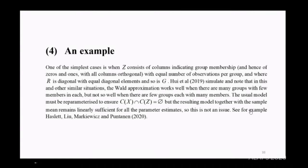An example. One of the simplest cases is when Z, the matrix of zeros and ones that multiplies gamma, is columns containing group membership, hence zeros and ones, all columns orthogonal. I'm going to look at equal numbers of observations per group, R diagonal, and so is G. The Hui paper simulates this and notes that in this and other situations, the Wald approximation works well when there are many groups with few members in each, but not so well when there are few groups each with many members. I've reparametrized the usual model to ensure the column space intersection zero, but the model you get is still linearly sufficient, so this isn't an issue.